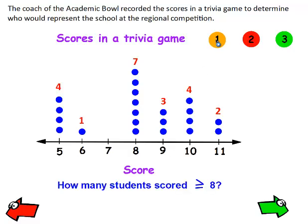A total of 4 students scored a 10. Let's answer some questions. How many students scored greater than or equal to 8? Here's the number 8. These students scored 8, and these scored greater than 8. So you would add up 7 plus 3 plus 4 plus 2, because all of these students scored greater than or equal to 8. And that's 16 students.